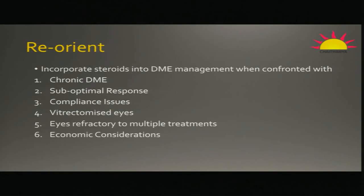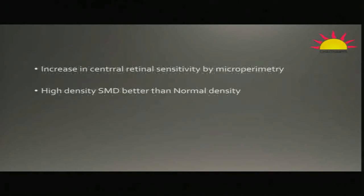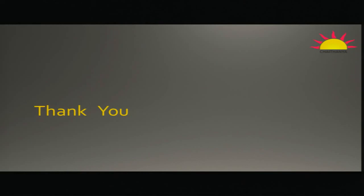To summarize: before switching or adding steroids in a DME patient, you have to define whether the patient has chronic DME, whether you have proved suboptimal response to anti-VEGF, and whether you have proved adherence to a proper schedule — especially in vitrectomized eyes or patients on multiple treatments. Adding micropulse is also an important consideration — the effect of micropulse is quite spectacular. A combination treatment using anti-VEGF, steroids, and micropulse, tailored in a custom fashion for each patient, is probably the way forward. Thank you for your patience and listening.